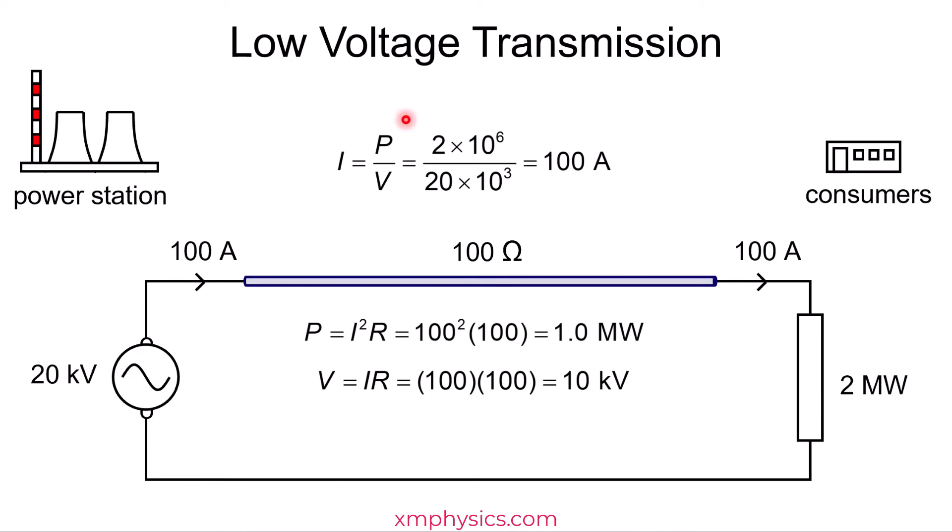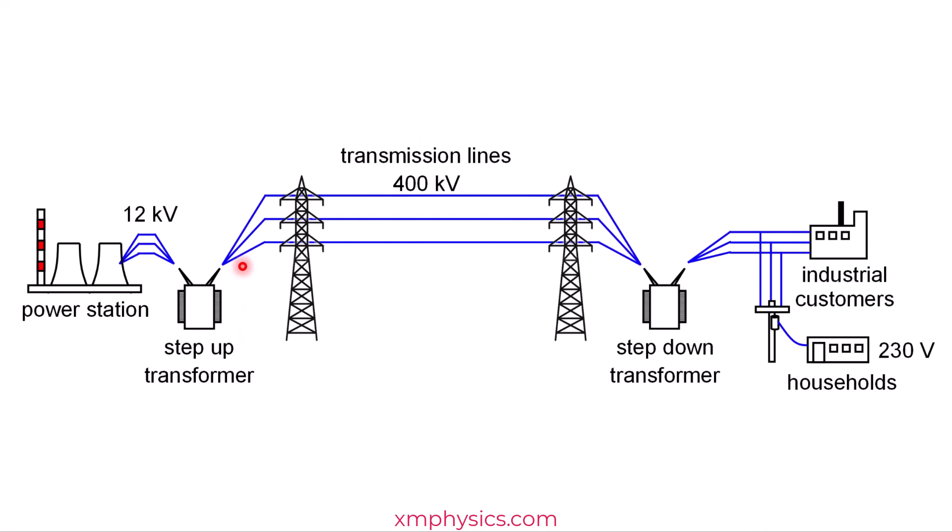So are you convinced now that high voltage transmission is good and low voltage transmission is bad? But now some students will say, but the problem is with low voltage, right? The problem is not with DC. Why couldn't Edison use high voltage DC? Very smart, are you? To answer this question, we have to talk about this thing called the transformer. See you in the next video.